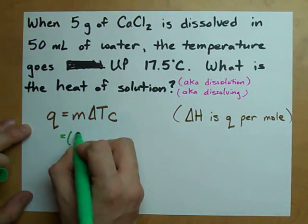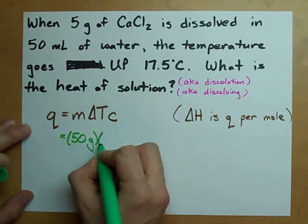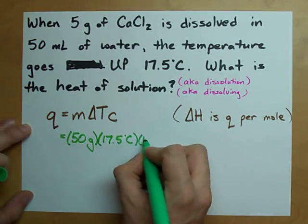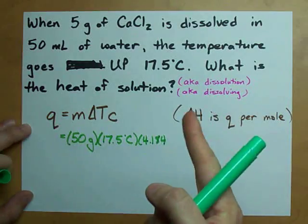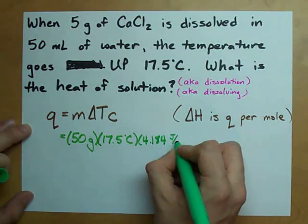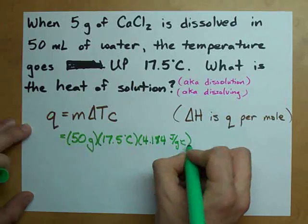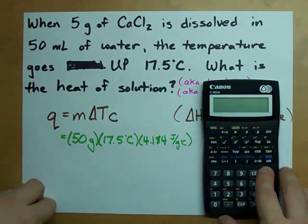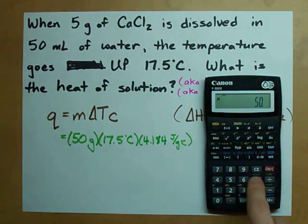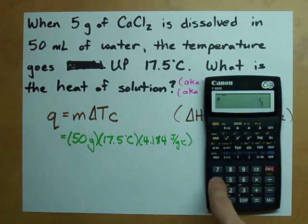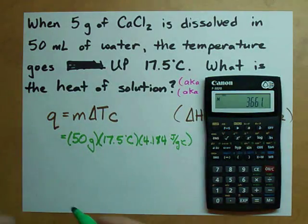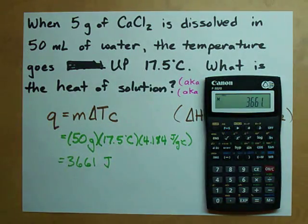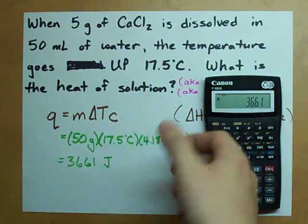Well, it turns out that I have 50 grams of the water. Here I have a temperature change of going up 17.5 degrees Celsius. And my heat capacity of water, which I just know and you probably should too by now, is 4.184 joules per gram degree Celsius. Notice the grams cancel out, the degrees Celsius cancel out. And when I do this on my calculator, I end up with 50 times 17.5 times 4.184. I get 3661 joules. Sweet. That's how much heat was released to heat up the water.